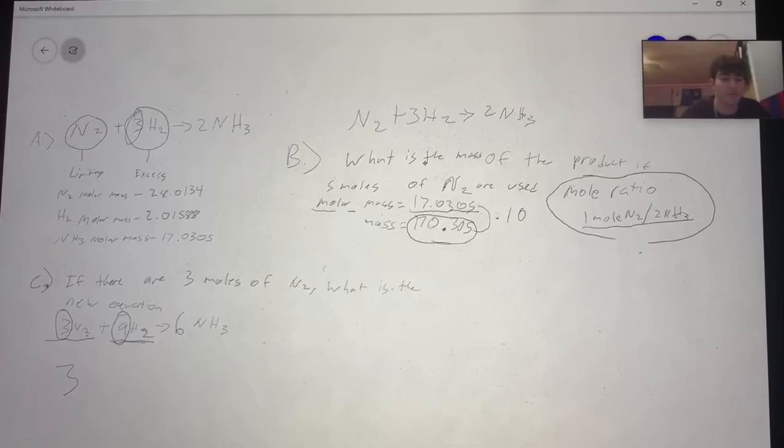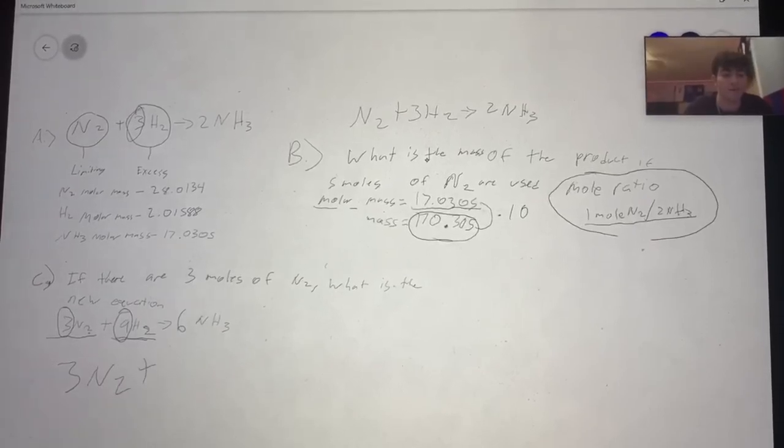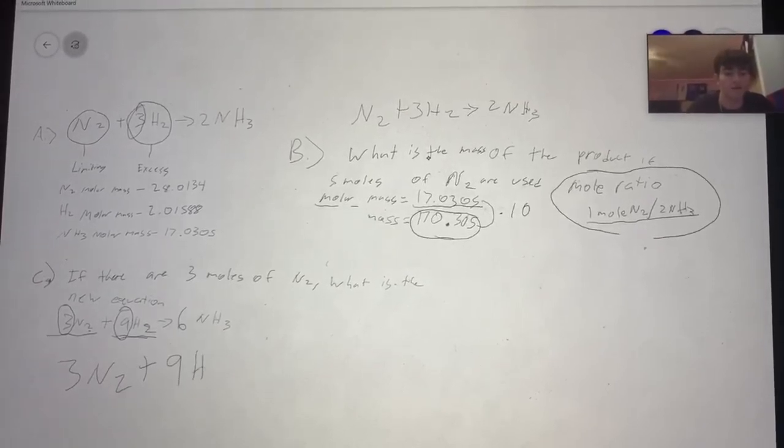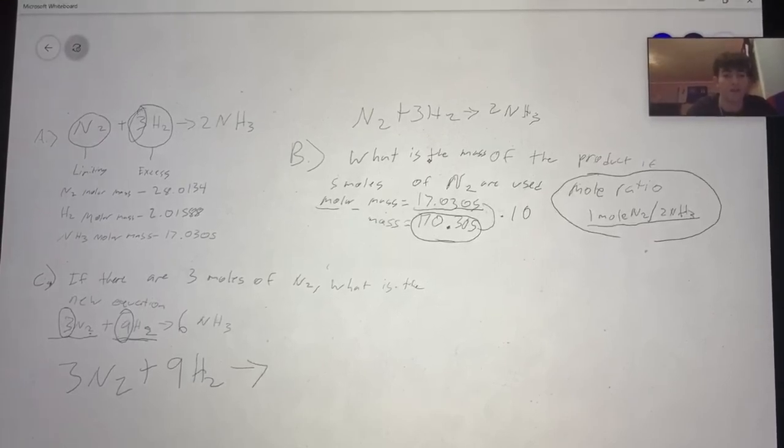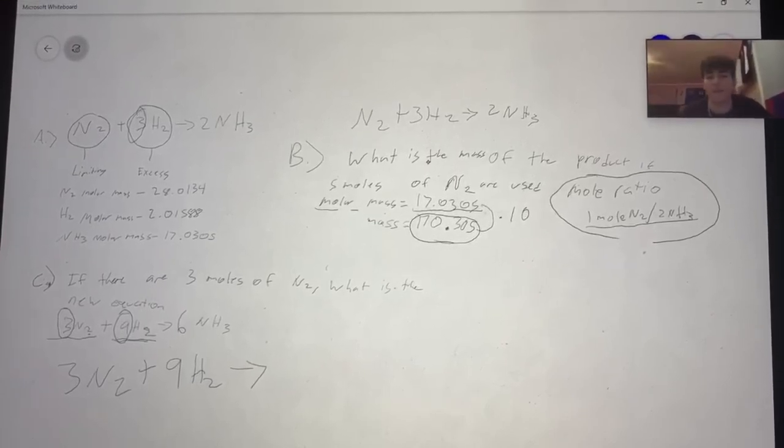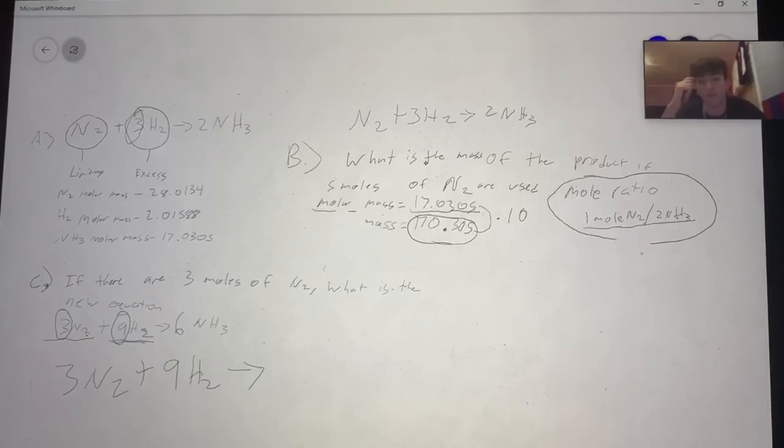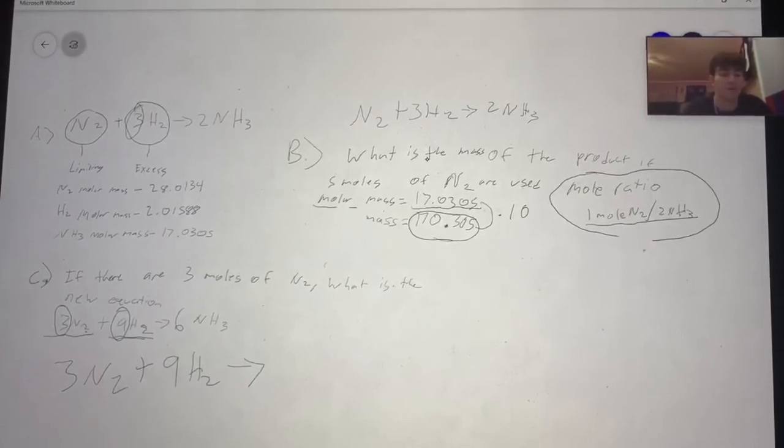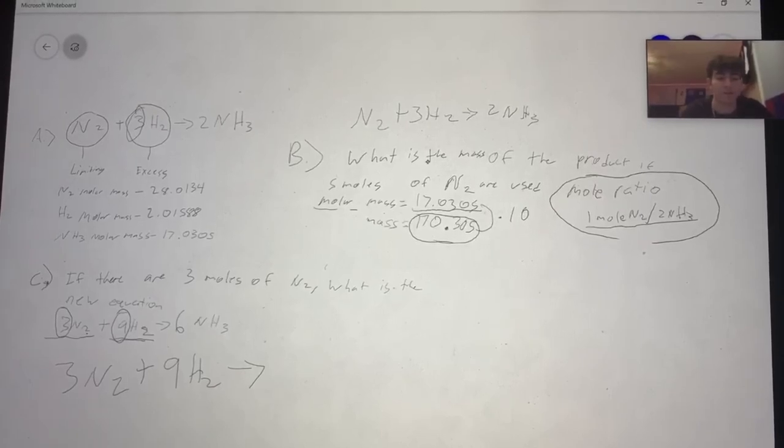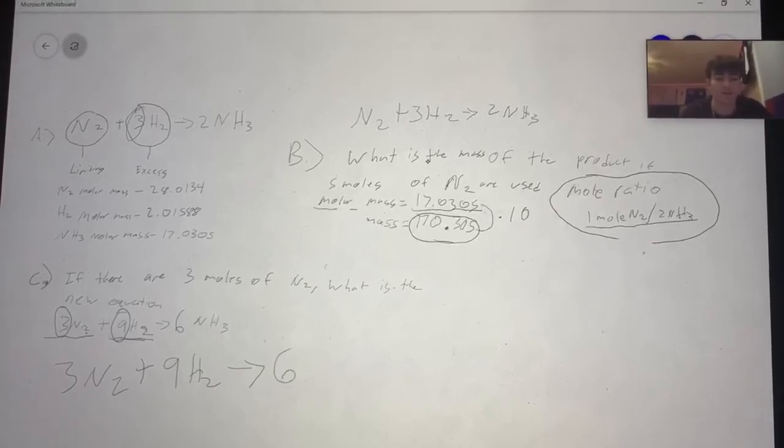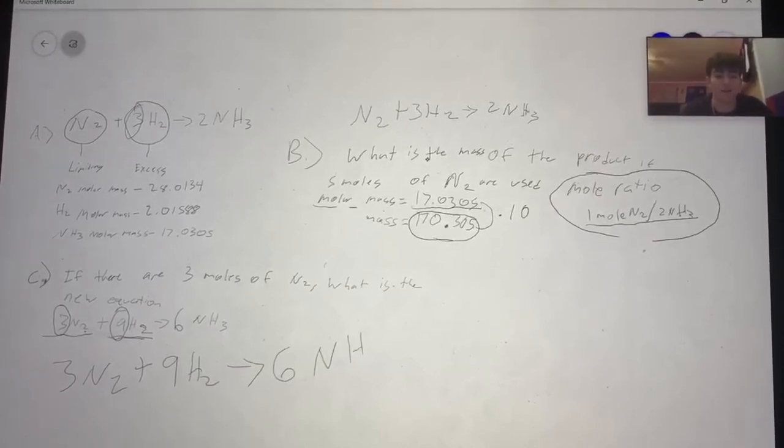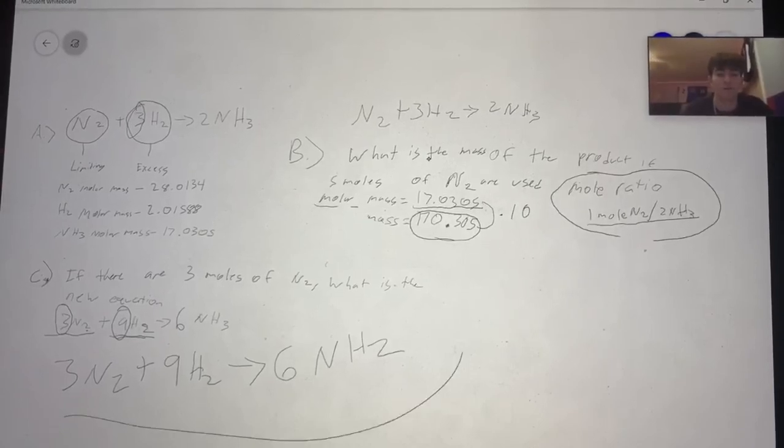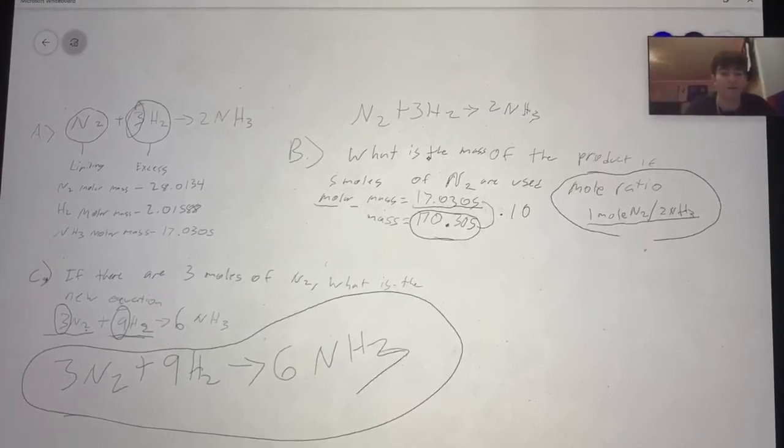We have 3N2 plus 9H2 reacts to form... And we know from part B the mole ratio of N2 to NH3 is one to two. We must double this three since it's a one to two ratio. It becomes 6NH3. Therefore this becomes our new equation.